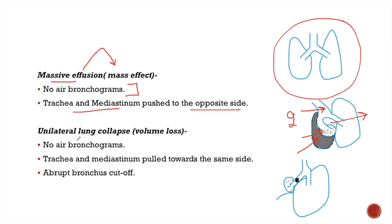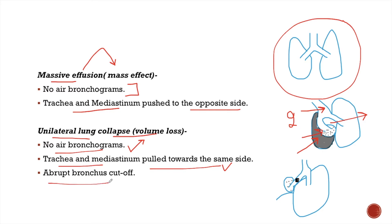The next cause for opaque hemithorax is unilateral lung collapse. Unilateral lung collapse is characterized by features of volume loss. There are no air bronchograms in unilateral lung collapse because air bronchograms are features of consolidation. Features of volume loss — like trachea and mediastinum being pulled towards the same side — are seen in case of lung collapse. There may also be abrupt cut-off of the bronchus.